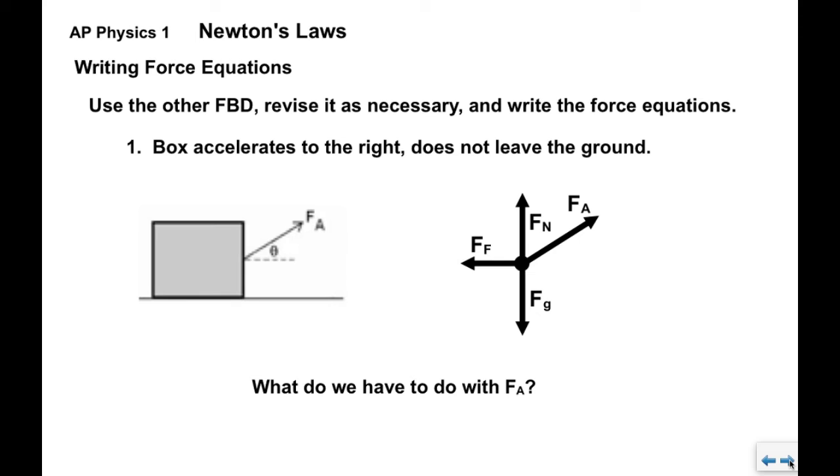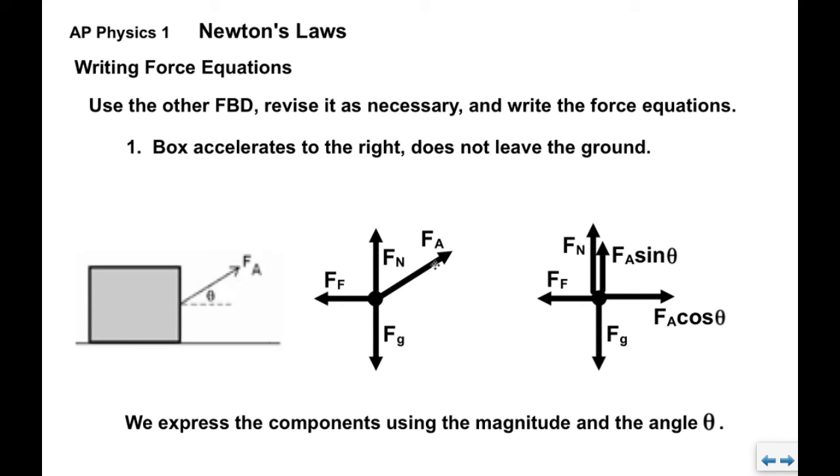Now let's look at a more complicated example. We drew the free body diagram for this situation, the crate with a force at an elevation angle theta. The box accelerates to the right, does not leave the ground. When we look at the free body diagram, we need to resolve Fa into components because it doesn't line up with the x and y direction. Fa pulls to the right and up, so it has an x component and a y component. The x component pulls to the right, the y component pulls up. We're going to express the components using the magnitude Fa and then the sine and cosine of angle theta.